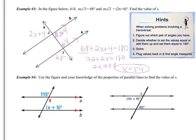We'll do one more example, then you'll try one on your own. In example 4, use the properties of parallel lines to find the value of x. The given angles don't form a special pair directly, so using vertical angles, angle 4 is also 115 degrees. That angle and the angle labeled (x + 5) are consecutive interior angles — both inside the lines on the same side of the transversal — so they're supplementary. Setting up: 115 plus x plus 5 equals 180. Since 115 plus 5 is 120, we get x equals 60.